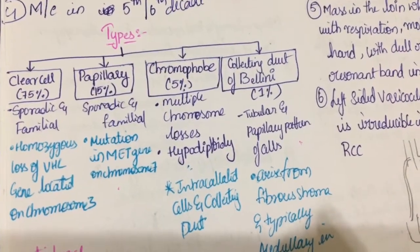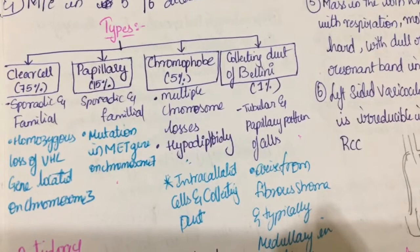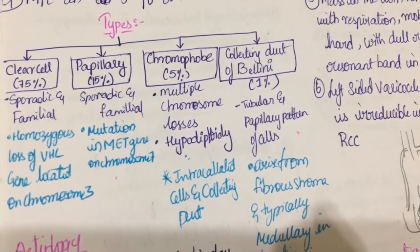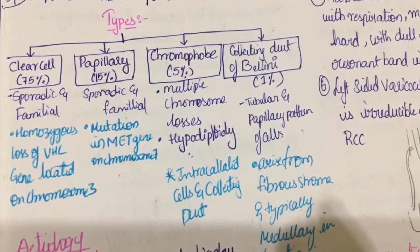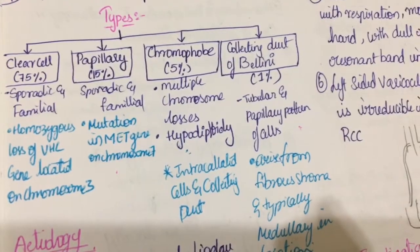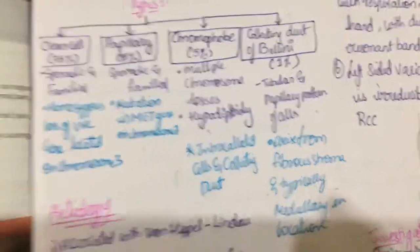Types. There are 4 types. Clear cell, papillary, chromophobe and collecting duct of bellini. Clear cell are major type which accounts for 75%. They are sporadic and familiar.